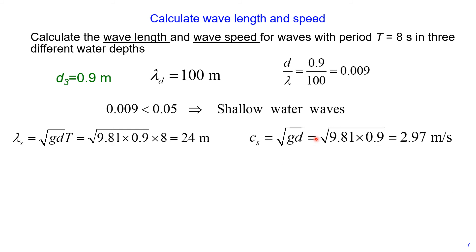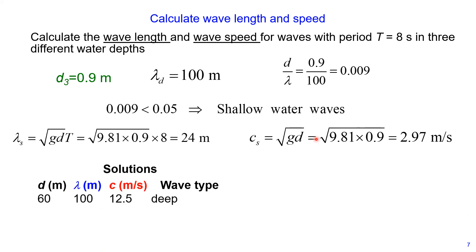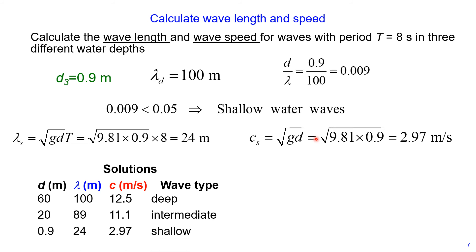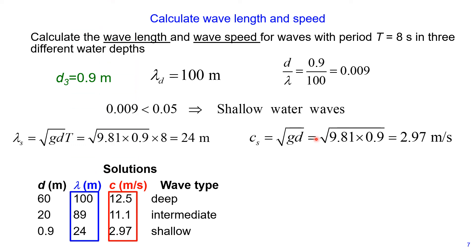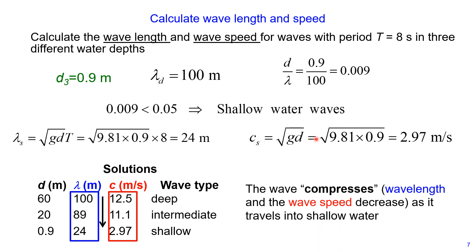We obtain a wavelength of 24 meters and wave speed of 2.97 meters per second. Our results are: 60 meters — deep wave, 20 meters — intermediate wave, and 0.9 meters — shallow waves. You can see that with reduction in water depth, both wavelength and wave speed reduce. This is called wave compression — both wavelength and wave speed decrease as the wave travels toward the shoreline.